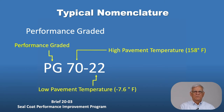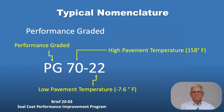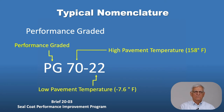PG stands for performance graded. The high temperature is the first number — that's 70 degrees C or 158 degrees Fahrenheit, so this pavement should perform adequately up to that pavement temperature. The minus 22 is minus 22 degrees C or minus 7.6 degrees Fahrenheit, so this pavement would be expected to perform down to that low pavement temperature without any significant performance issues.